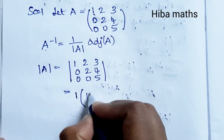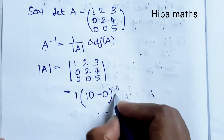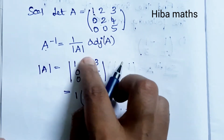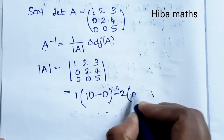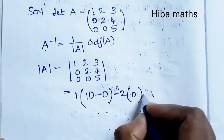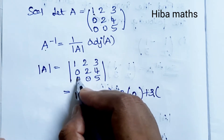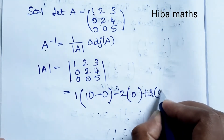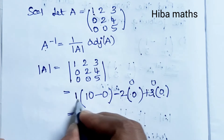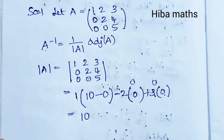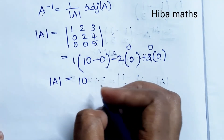Computing the determinant: 2×5 = 10, minus 0. First element: expanding along the first row, the first cofactor gives 2×5 - 0×4 = 10. The second and third cofactors involve zeros, giving 0. So |A| = 1×10 = 10.